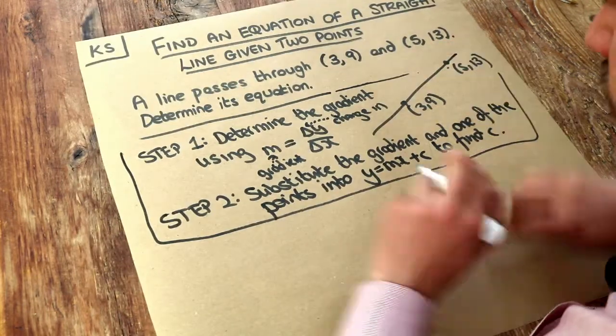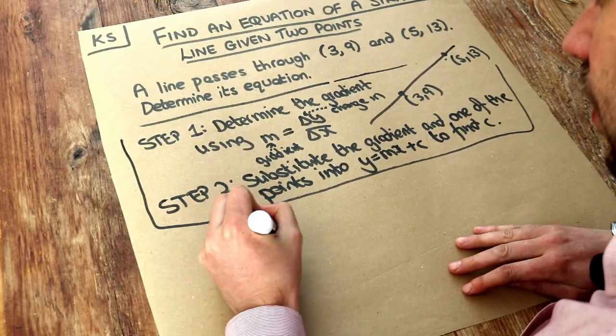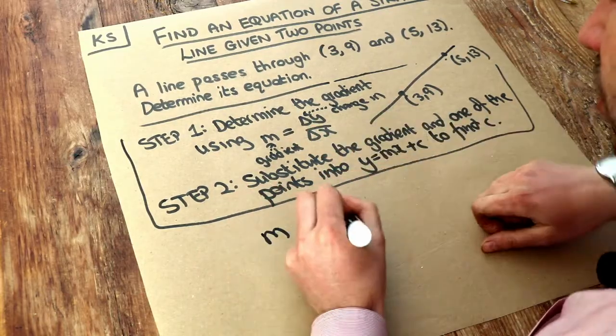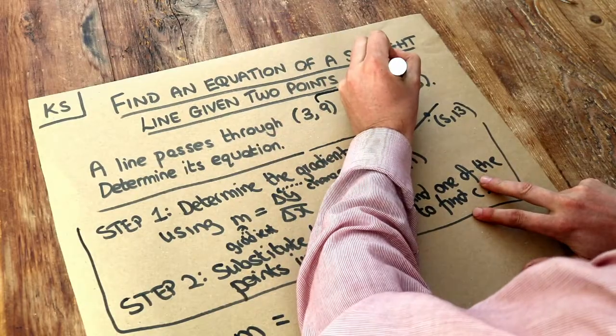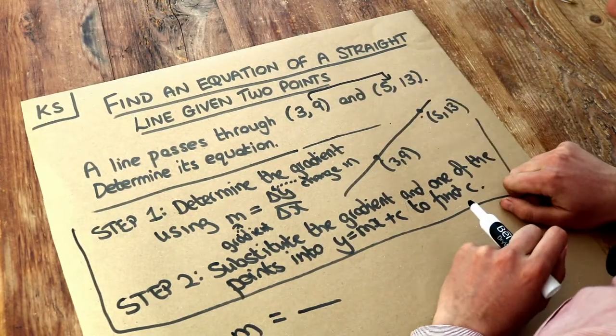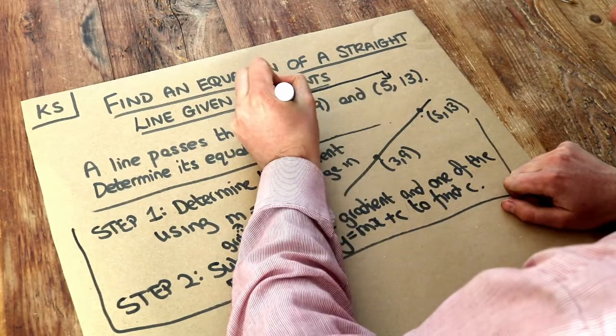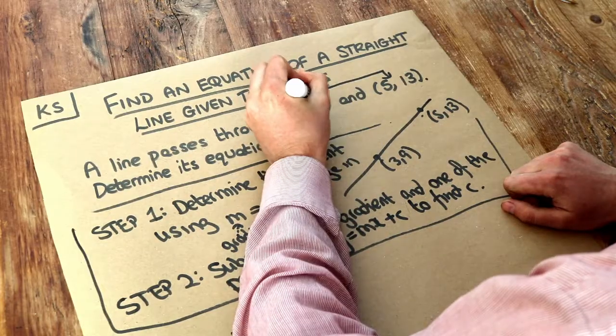So let's do it with these points. We want to find the gradient first. So the gradient m is equal to the change in y. Well let's look, going from this point to this point, what's the change in the y value? Remember the first value is the x, the second value is the y.